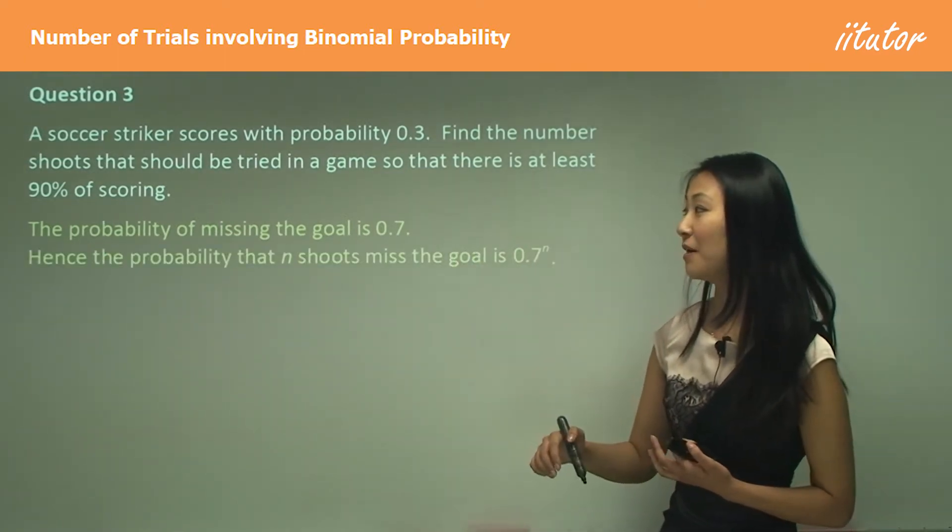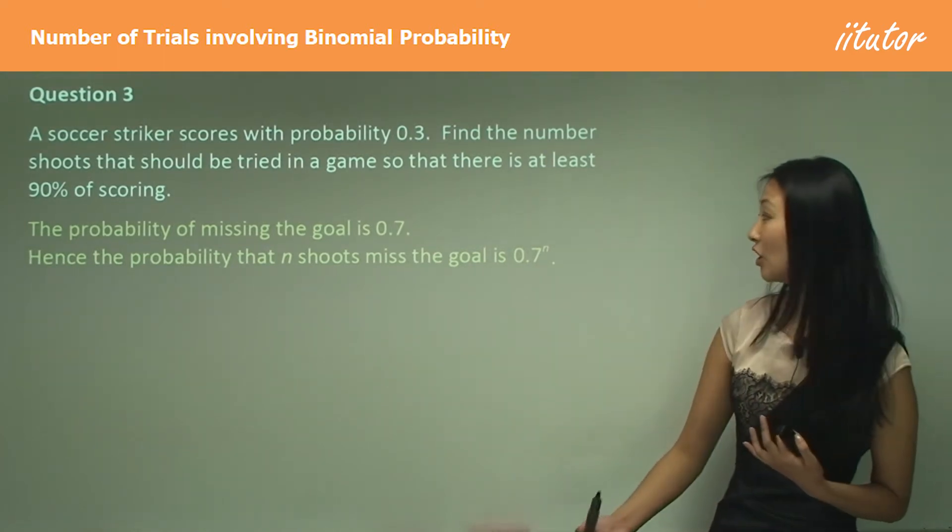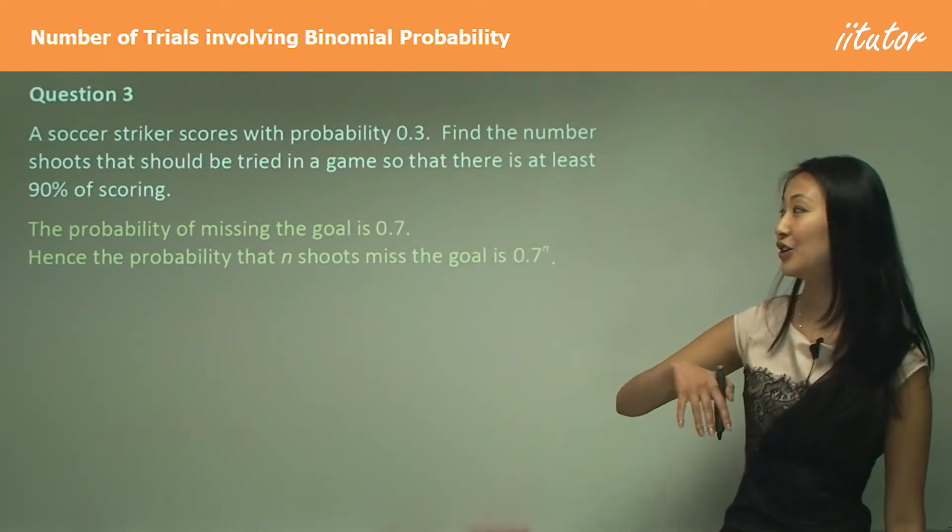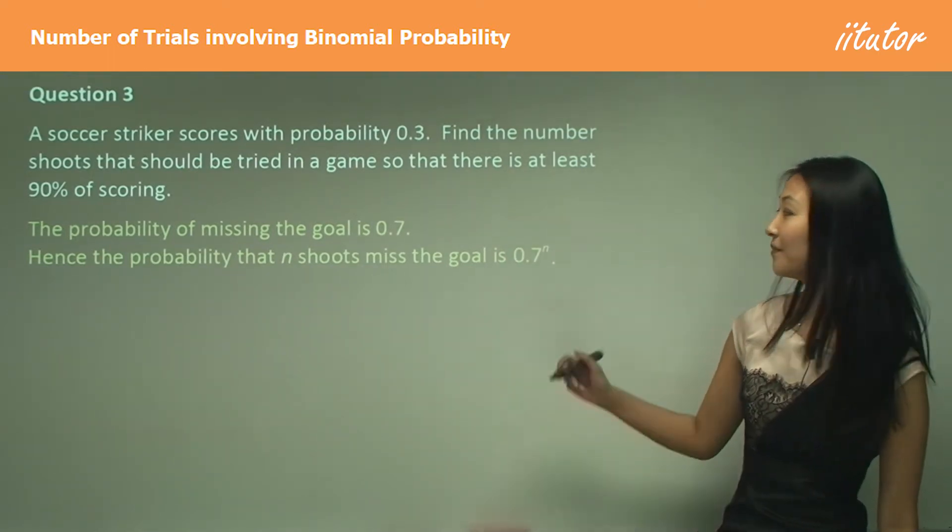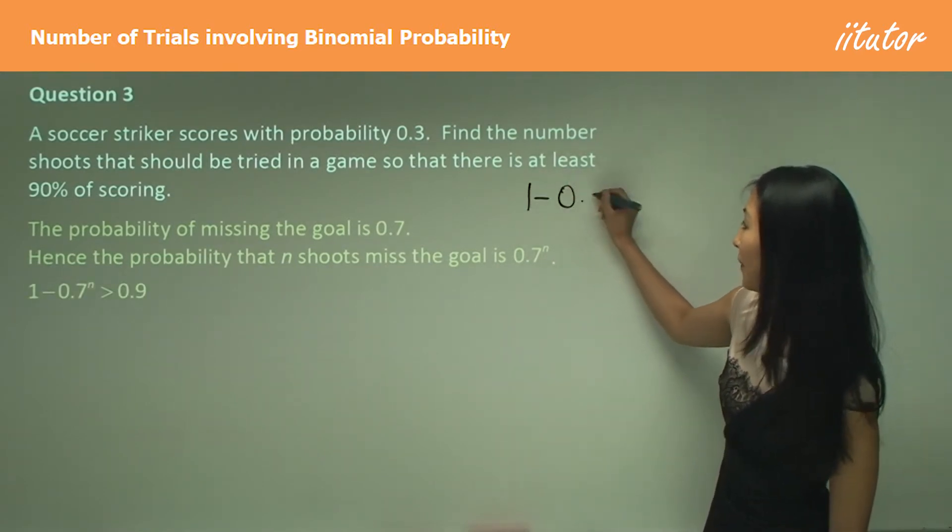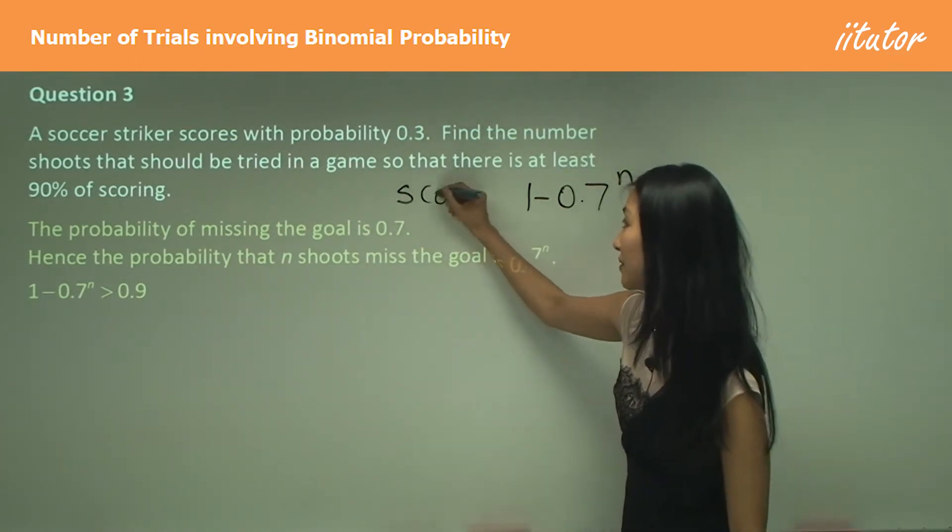Therefore, the probability that n shoots misses the goal is 0.7 to the power of n, so however many shoots there are. So therefore, 1 minus 0.7^n is going to represent the probability that he scores.